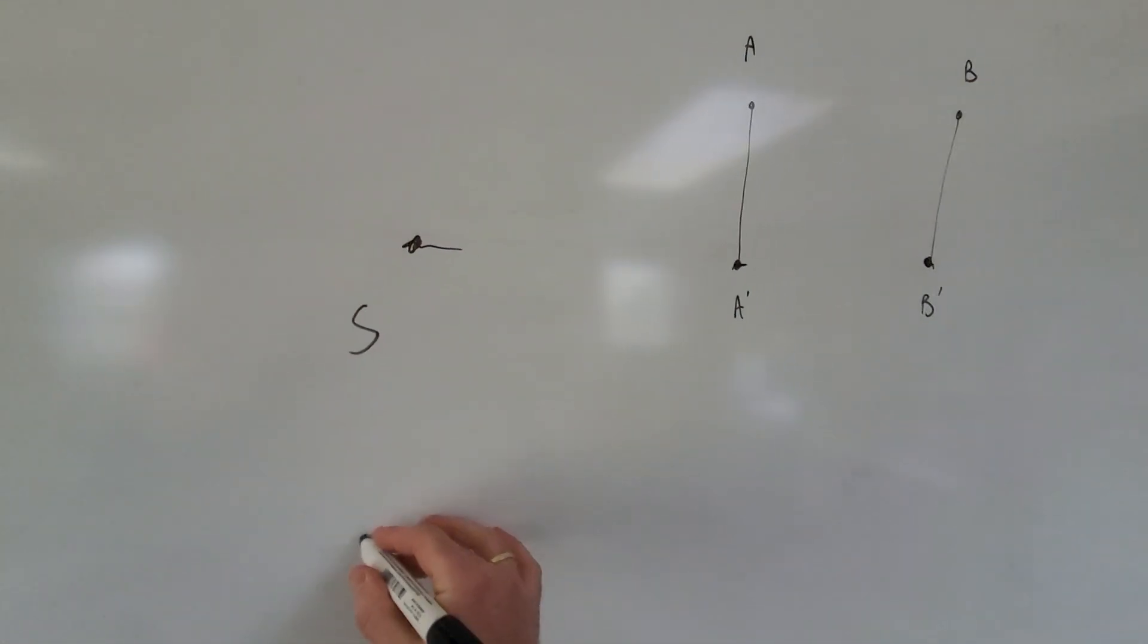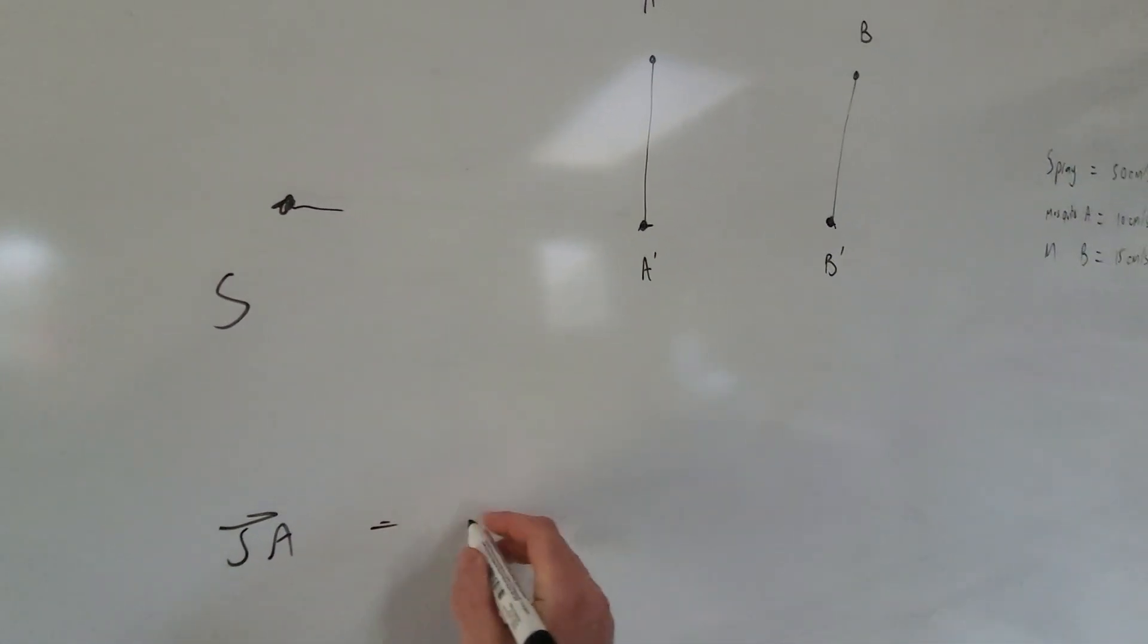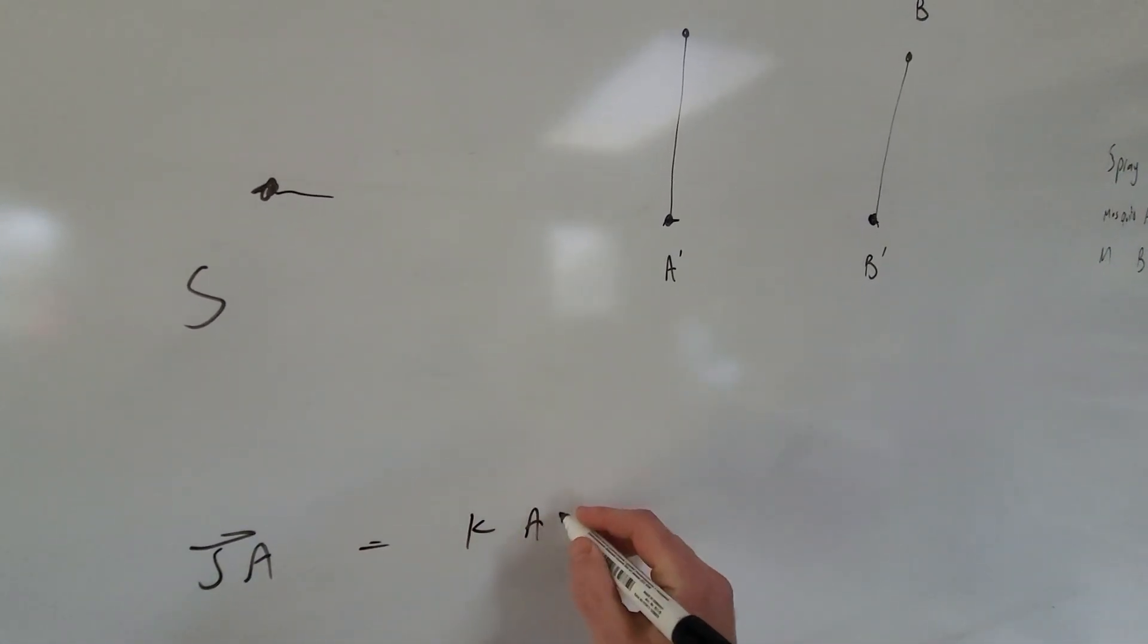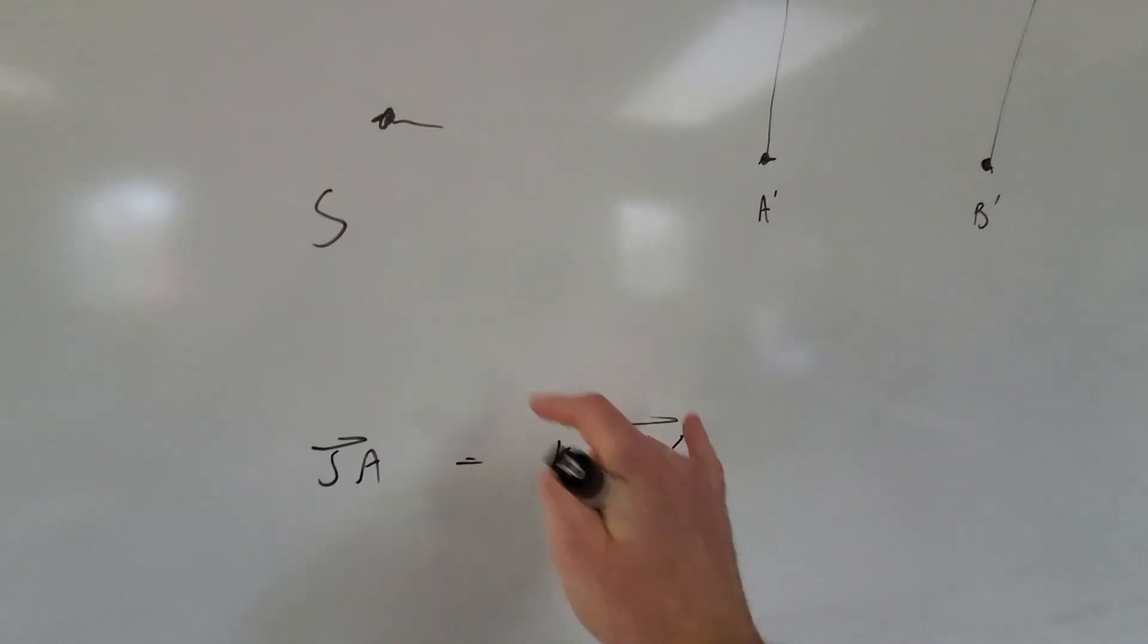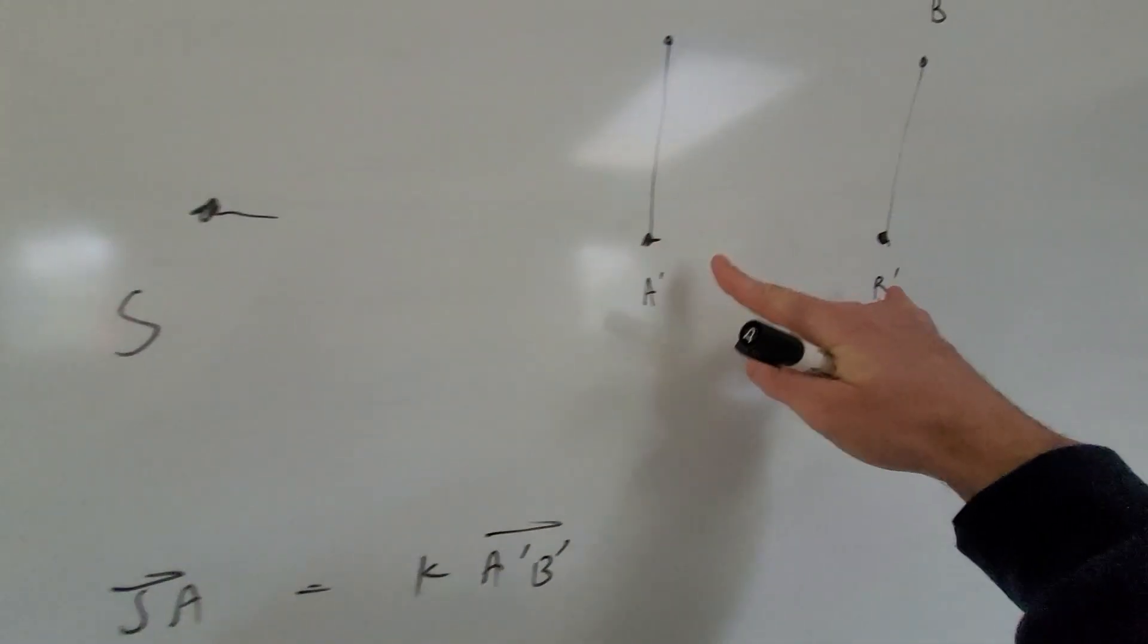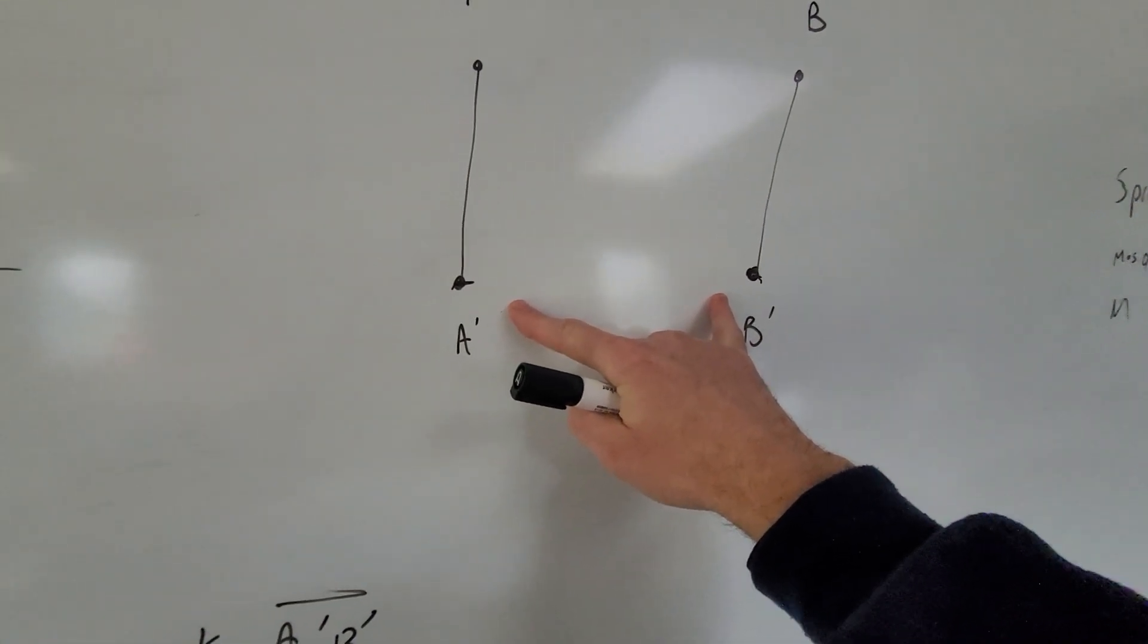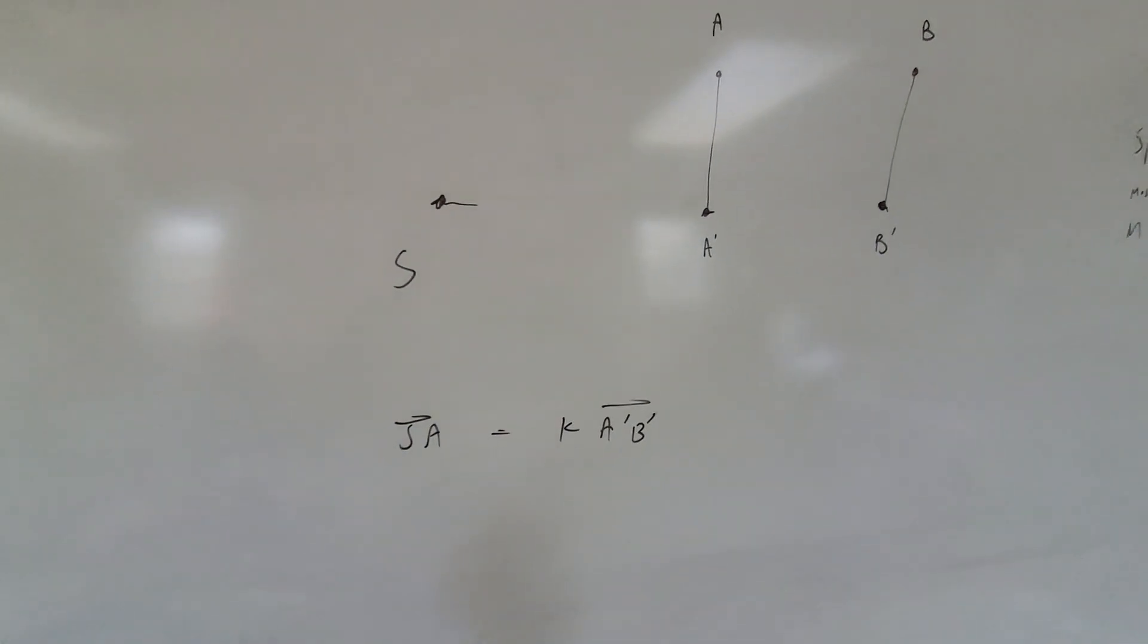And that's going to be such that vector SA is equal to some multiple of vector A'B'. Okay, that this vector is equal to some scalar multiple of this vector. That's going to mean they lie in the same direction.